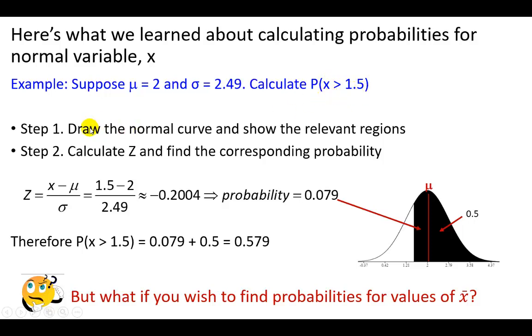As we learned, the first thing to do is draw the normal curve and show the relevant regions, which is what I've done here. So with the population mean of 2 right here, we're looking for probability that X is greater than 1.5. Well, 1.5 is a value to the left of the mean of 2, so it's going to be somewhere around there. This is the region we shaded, which is inclusive of this half equaling 0.5. All we've got to do is figure out what this area is and add it to 0.5.